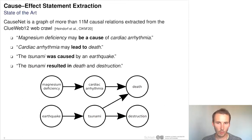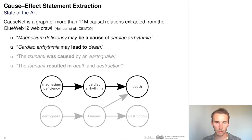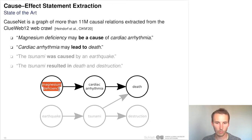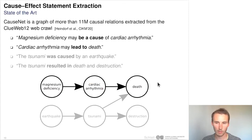This works quite well, but it was not previously possible to extract the health-related part of this graph, which was our task in this work. In particular, we want to remove instances that are not health-related and keep only the phrases which have some relation to health — such as magnesium deficiency, cardiac arrhythmia, and death — while ignoring non-health-related relations such as a tsunami causing destruction.